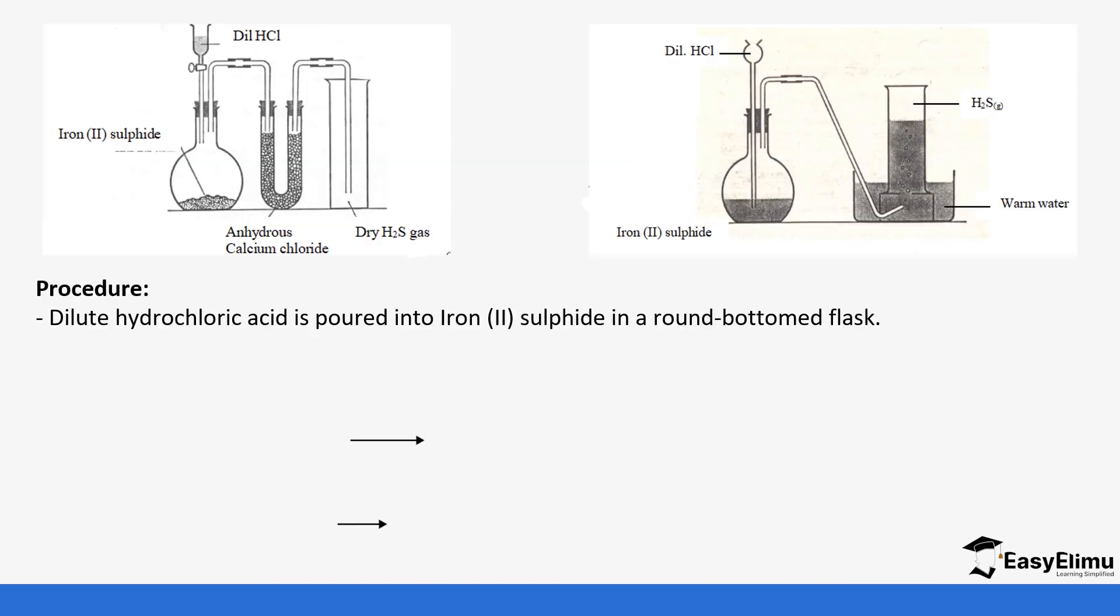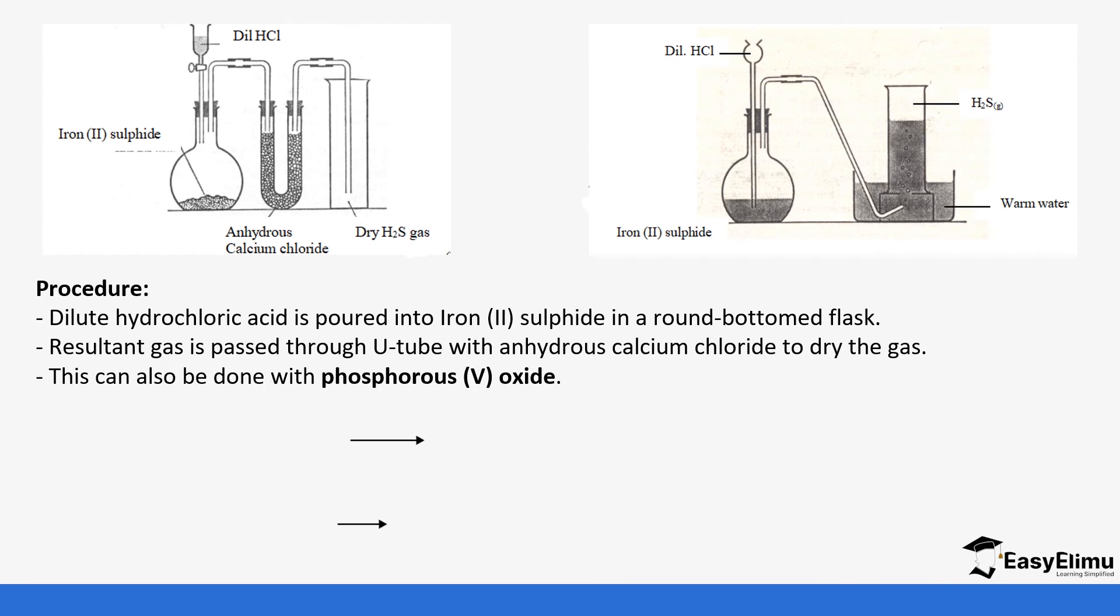Dilute hydrochloric acid is poured onto iron sulfide in a round bottomed or flat bottomed flask, and the gas is passed through a U-tube with anhydrous calcium chloride to dry the gas. This can also be done with phosphorus pentoxide.